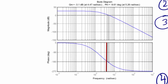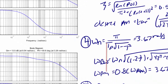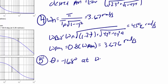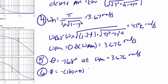Step 5: looking at the uncompensated Bode diagram, theta is equal to negative 168 degrees at omega-pm equal to 3.676 radians per second. We can use this to find phi, our required phase angle. Phi equals negative 180 plus theta plus the phase margin plus 5, which is negative 12 plus 53.17 plus 5. So the required phase angle is 46.17 degrees.